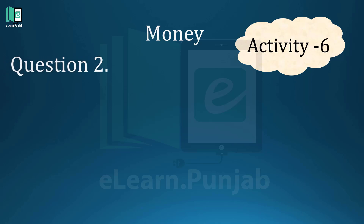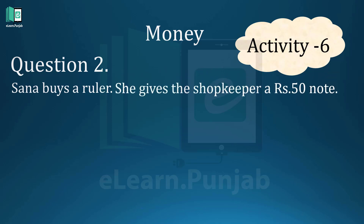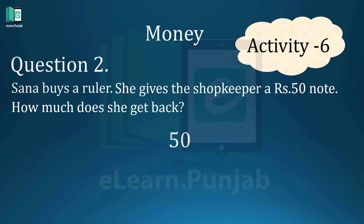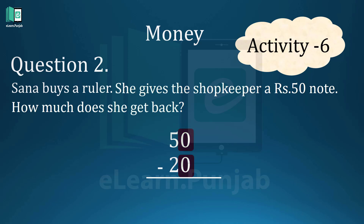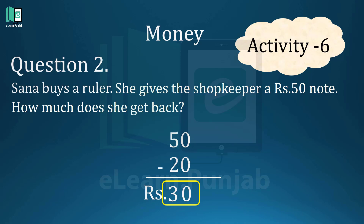Question No. 2. Sana buys a ruler. She gives the shopkeeper a Rupees 50 note. How much does she get back? Rupees 50 minus 20. On the right side, 0 minus 0 is equal to 0. On the left side, 5 minus 2 is equal to 3. So the answer is Rupees 30.